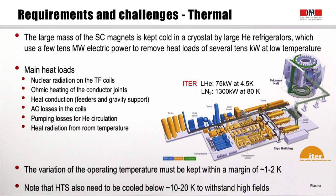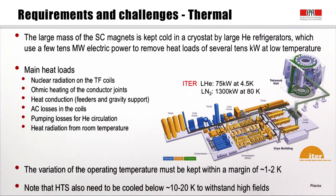The main heat loads are: nuclear radiation on the TF coils from neutrons generated by fusion reactions in the plasma core; ohmic heating at conductor joints; heat conduction through feeders and gravity supports; AC losses in the coils; pumping losses for helium circulation; and heat radiation from room-temperature components. The operating temperature variation must be kept within a margin of 1, maximum 2, degrees Kelvin. Even for high-temperature superconductors, cooling below 10 to 20 K is needed to withstand high fields and achieve good current densities.